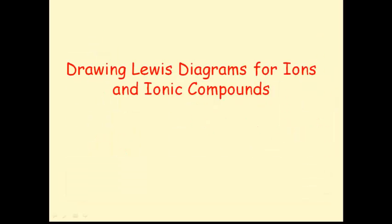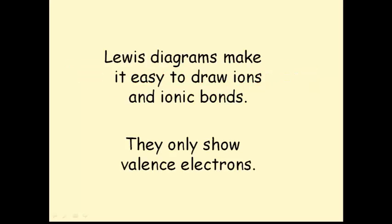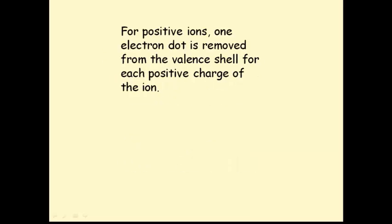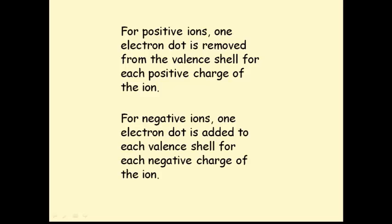Drawing Lewis diagrams for ions and ionic compounds. They only show the valence electrons. For positive ions, one electron dot is removed from the valence shell for each positive charge of the ion. For negative ions, one electron dot is added to each valence shell for each negative charge of the ion. Let's take a look at an example.